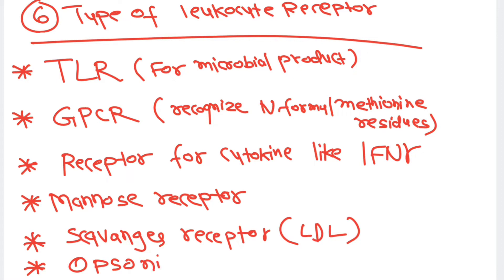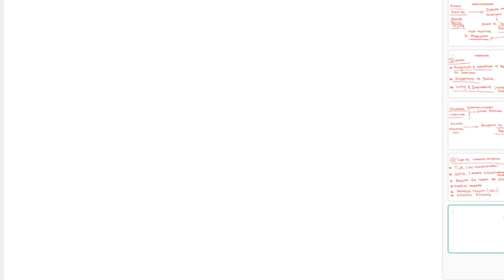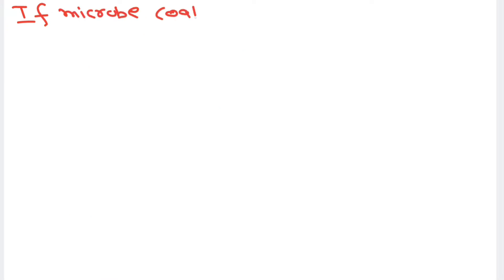Finally, there is an opsonin receptor on the leukocyte for recognition and killing of microbes. Those were the six receptors present on the leukocyte for microbe recognition.